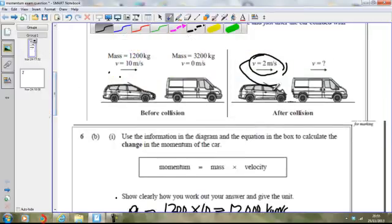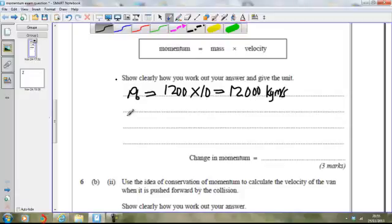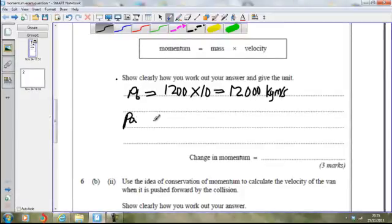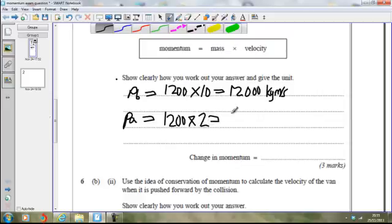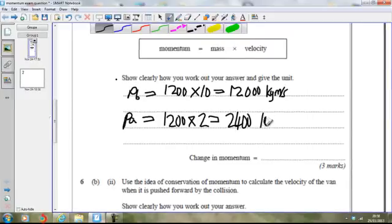Now the momentum after the collision. The momentum after the collision is going to be the product of the velocity and the mass of the car again. The mass of the car hasn't changed. It's still 1200 multiplied by the velocity of the car after the collision, 2 meters a second. And that gives us 2,400 kilogram meters per second. So the change in velocity is simply the 12,000 you start off with minus the 2,400 to get 9,600.